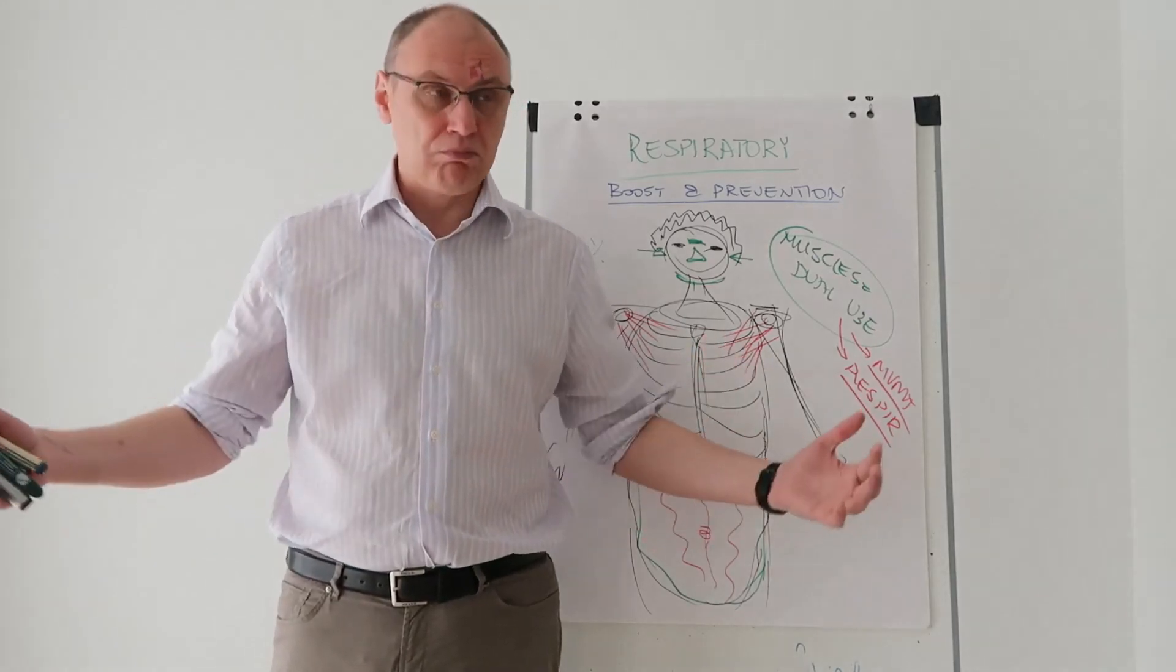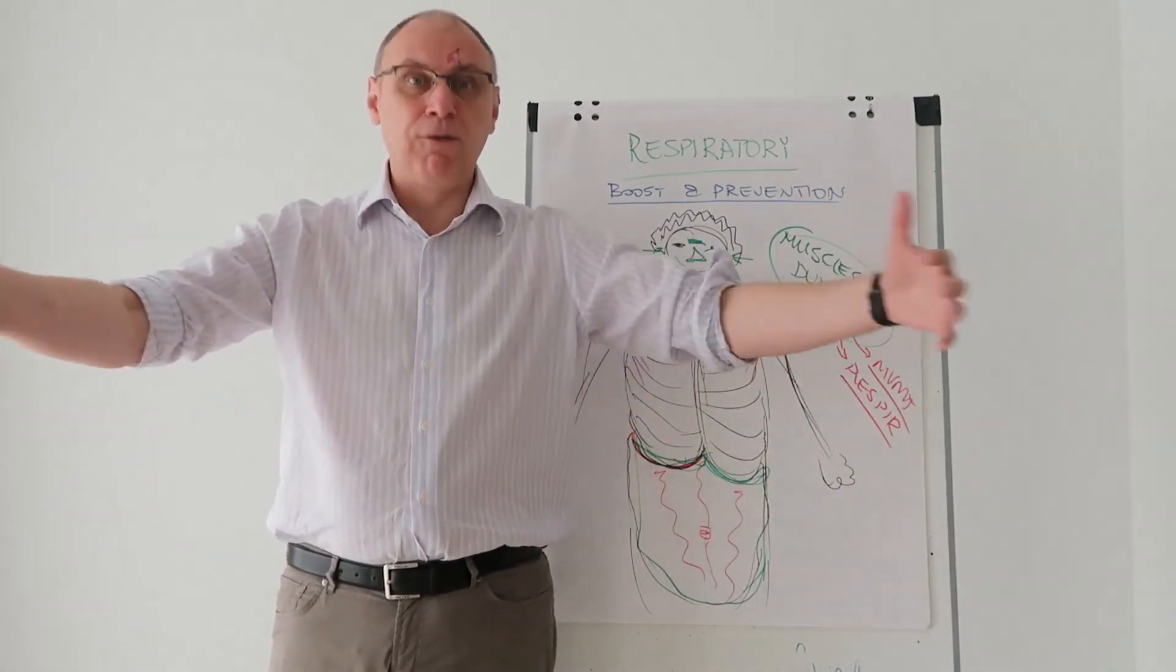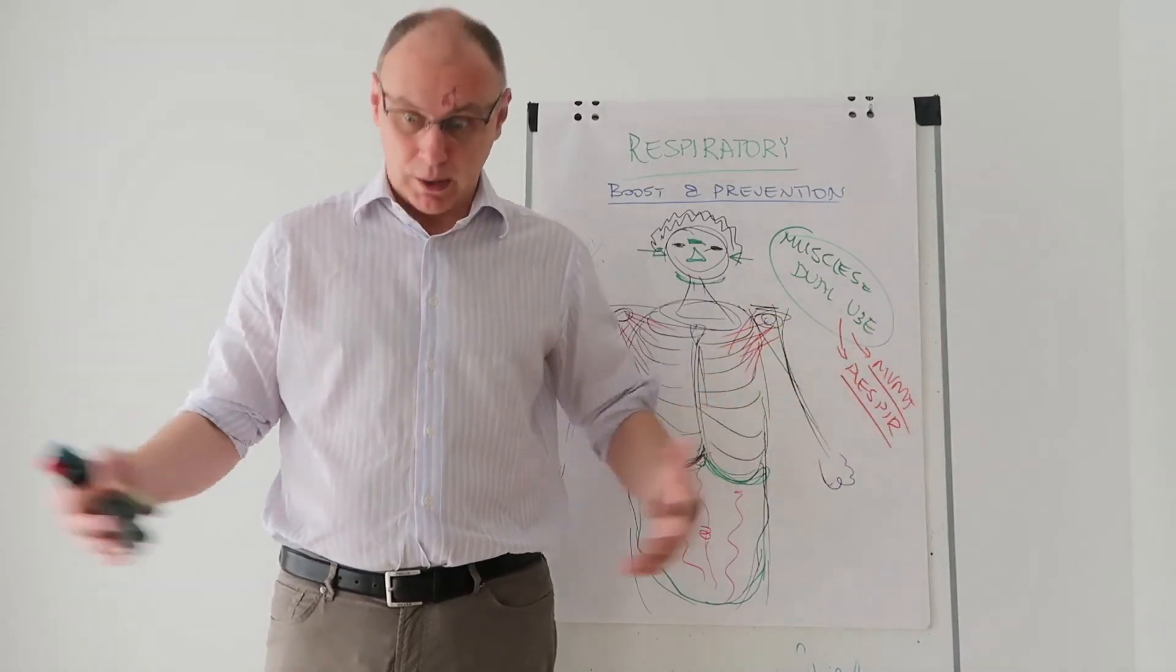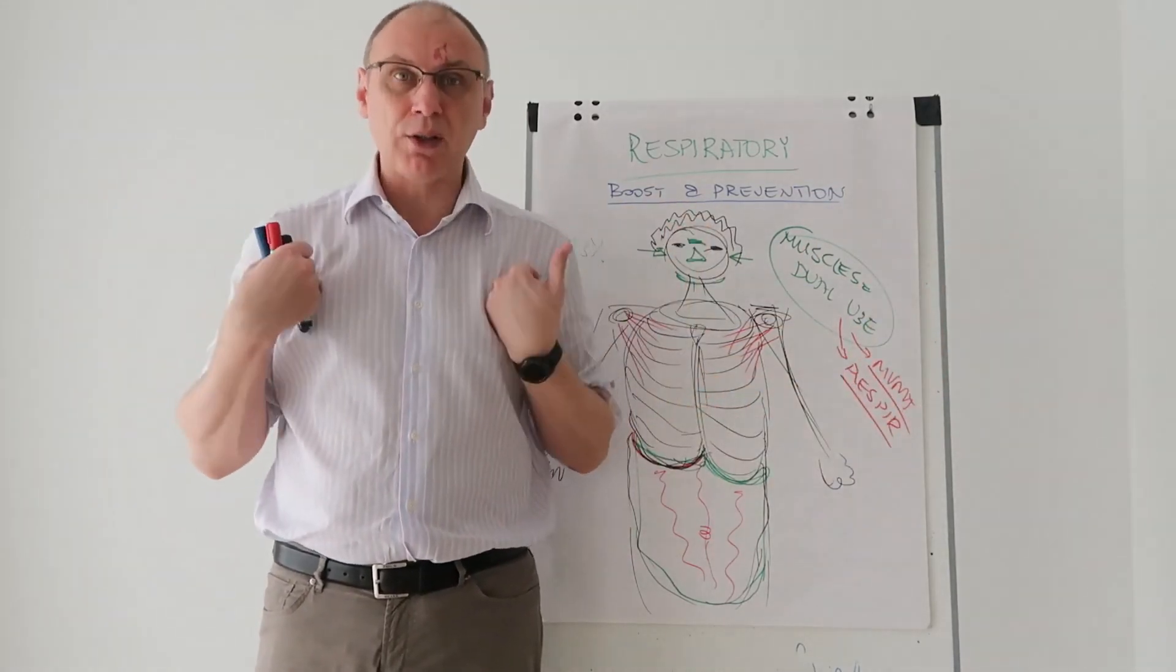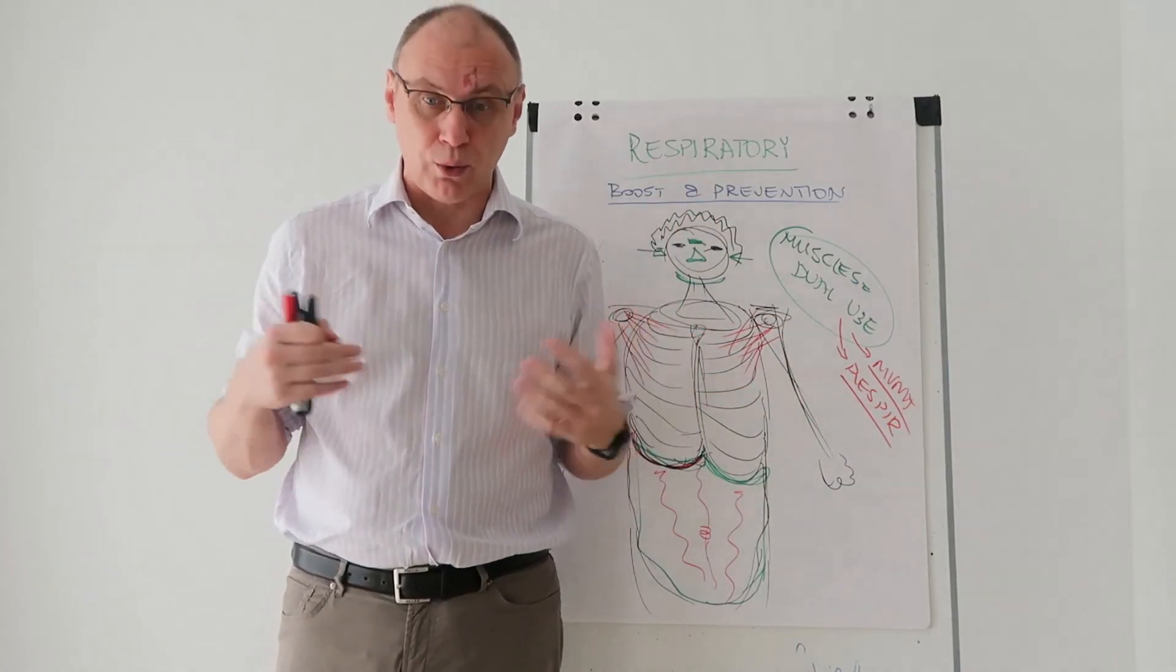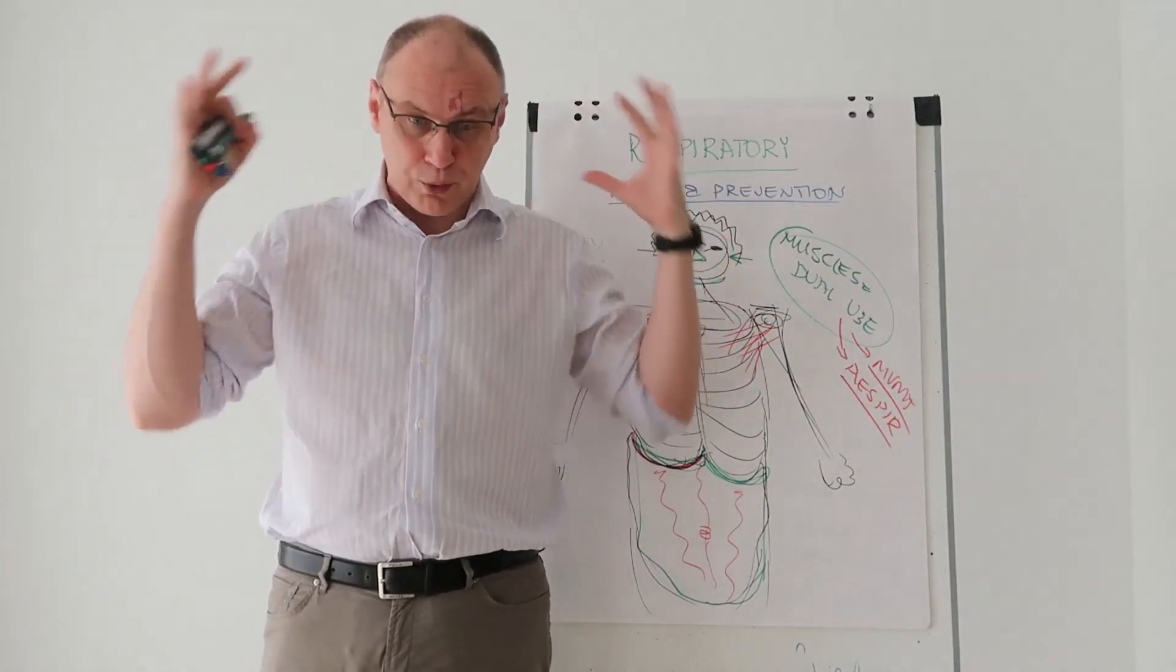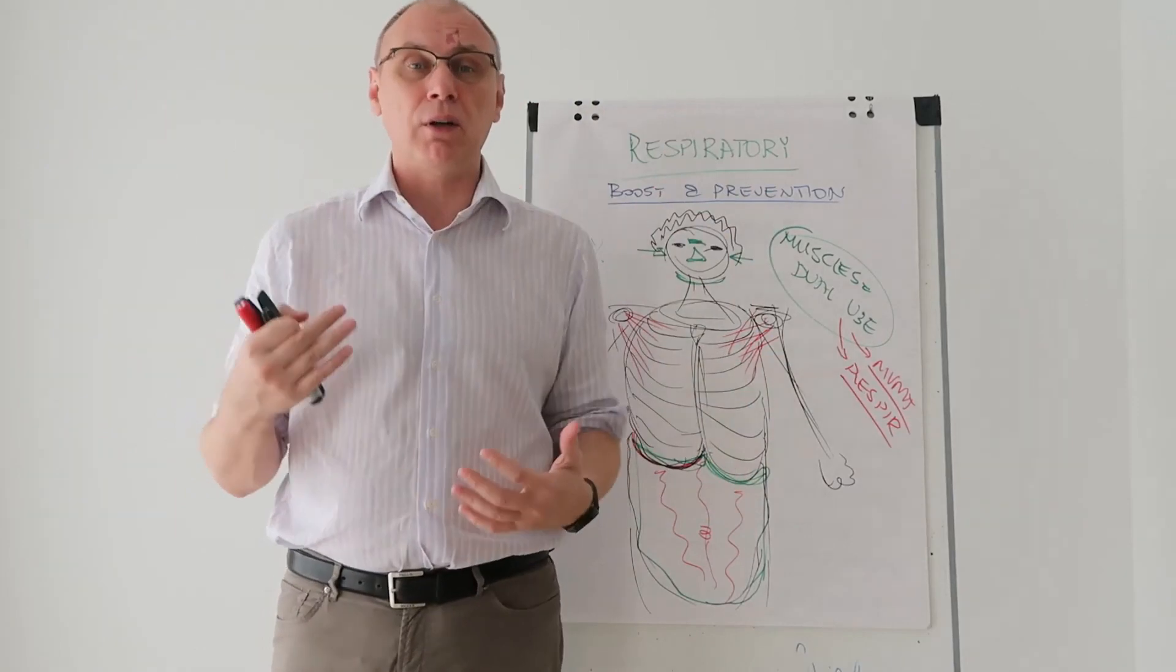200 liters is like a full bathtub. I'm 90 kilos, so I'm 90 liters of water. So that means that two full volumes of me is being filtered every day.